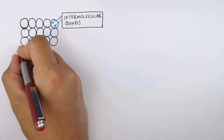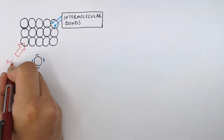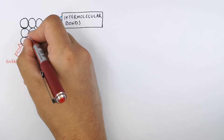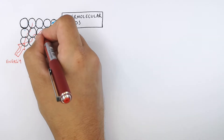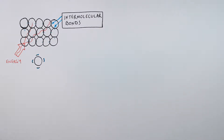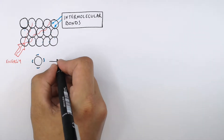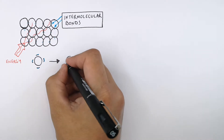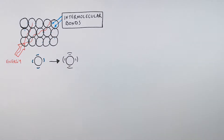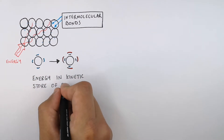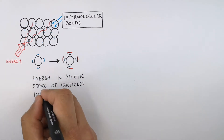So if you increase the thermal energy store of the object, that thermal energy is going to be transferred across the kinetic energy stores of the particles. Therefore, the internal energy of the object is going to increase. The particles will start to vibrate more — they start to move more. This is because the energy in the kinetic energy stores of the particles increases.